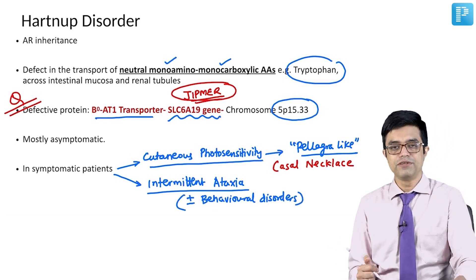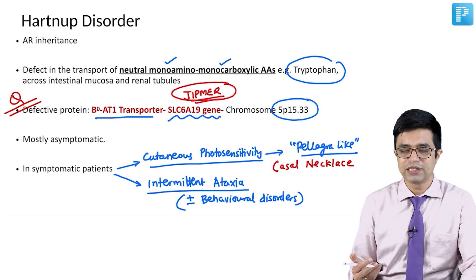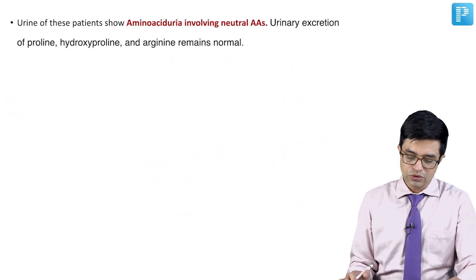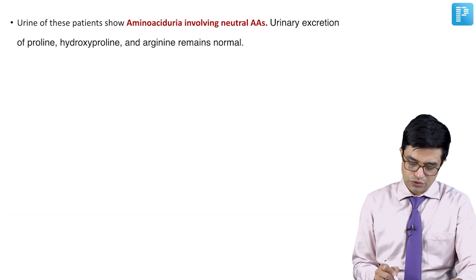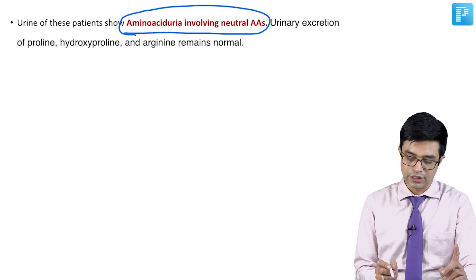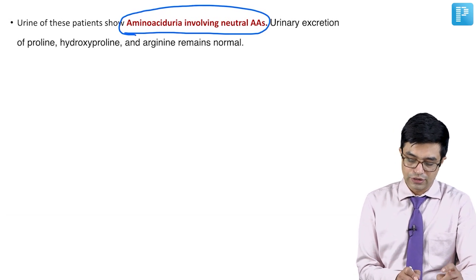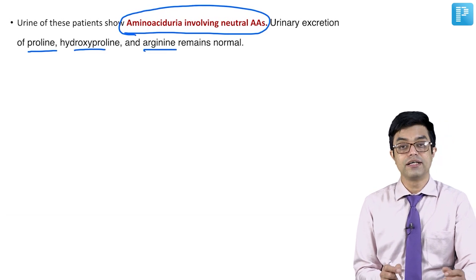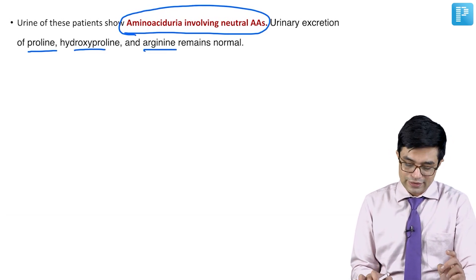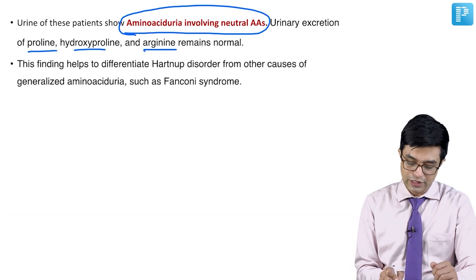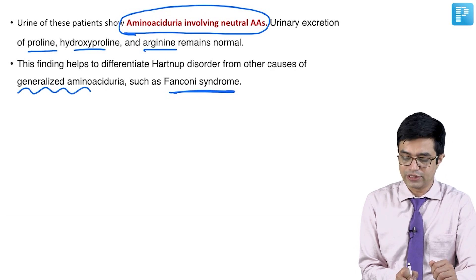These are the two cardinal features; many other variable features have been described but are not as characteristic. On investigation, the urine of these patients tends to show aminoaciduria involving neutral amino acids. The urinary excretion of other amino acids like proline, hydroxyproline, and arginine tends to remain normal, which helps distinguish Hartnup disorder from Fanconi syndrome where there is generalized aminoaciduria.